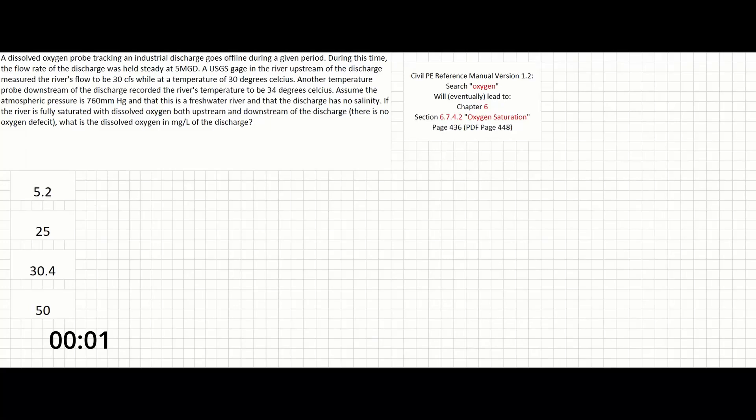In this problem, a dissolved oxygen probe tracking an industrial discharge goes offline during a given period. During this time, the flow rate of the discharge was held steady at 5 mgd. A USGS gauge in the river upstream of the discharge measured the river's flow to be 30 CFS while at a temperature of 30 degrees Celsius.